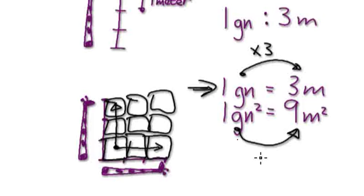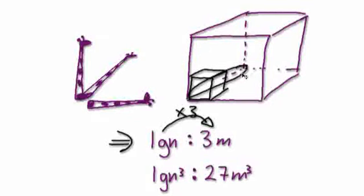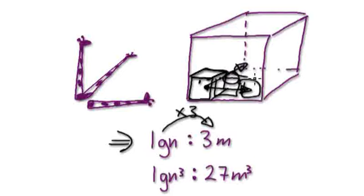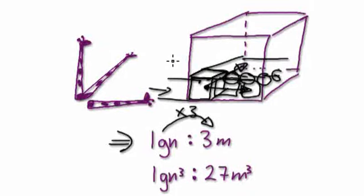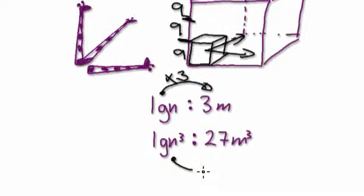From here to here, you would have to times by three squared. When you're looking at the length, it's just three times as long. But when you're looking at the area, one giraffe neck here is this thing here. You've got nine of these — seven, eight, nine. You have nine. So in effect, you are timesing this by three, and then you're also timesing this by three. So when you're looking at a length, it's just a simple matter of timesing by three. But when you're looking at an area, you've got to times by three to the power of two, in order for it to make sense.